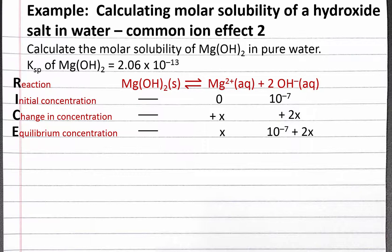For our equilibrium constant expression, the equilibrium constant equals the concentration of our products raised to the power of their coefficients divided by the concentration of our reactants raised to the power of their coefficients. Since our reactant is a solid, it does not show up in the equilibrium constant expression. Our solubility product constant expression is the concentration of magnesium ions times the concentration of hydroxide ions squared.